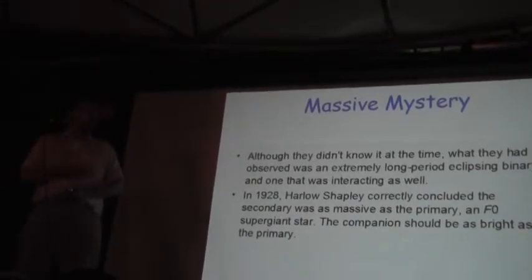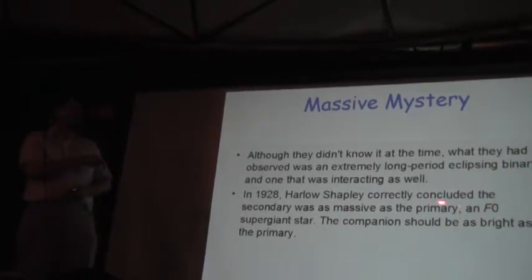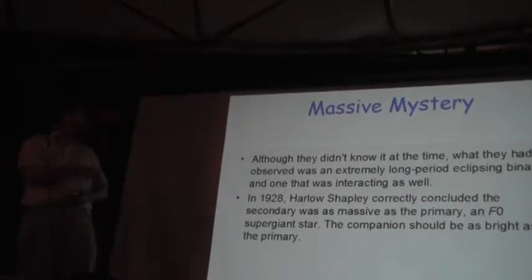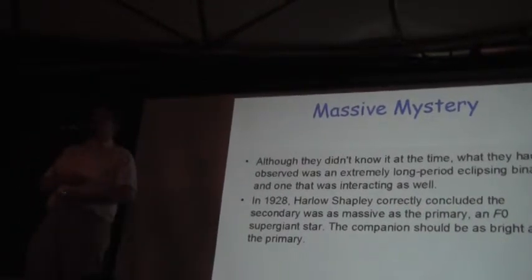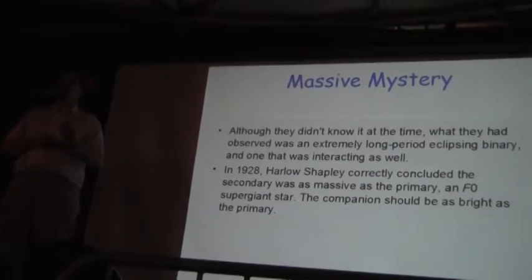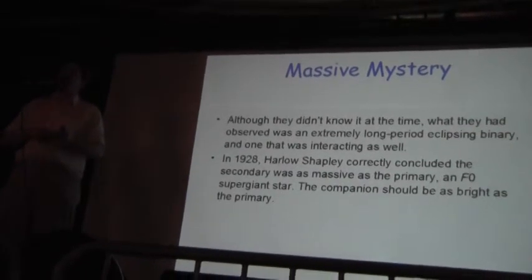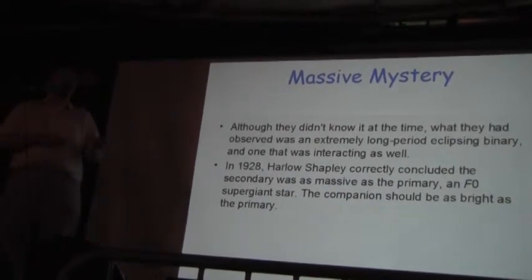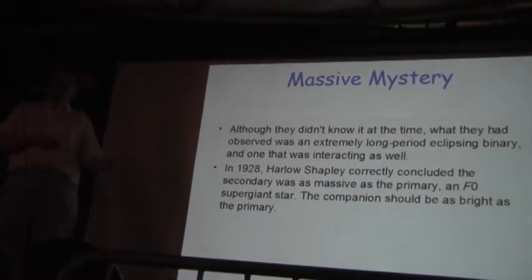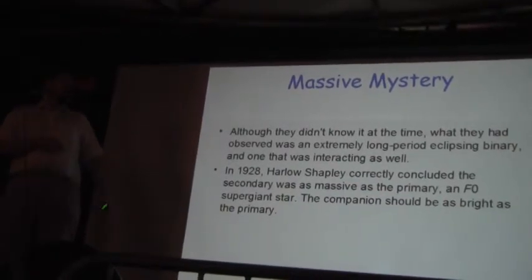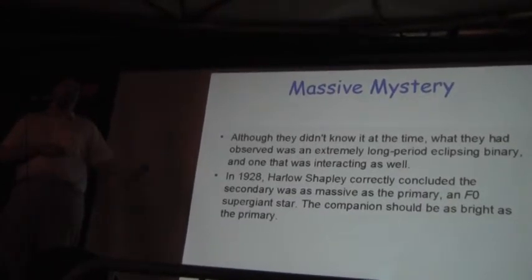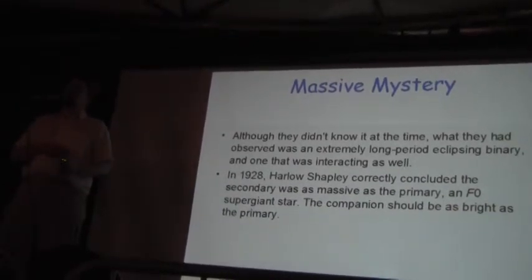And in 1928, Harlow Shapley correctly concluded, I'm not exactly convinced on this. That it was an F0 supergiant. That the primary is an F0 supergiant. Spectral classification's pretty loose in the interpretation of the spectra. A lot of people saying that it's a giant, and not a supergiant. So, its luminosity class is in doubt. And I've seen spectral classifications from F to the low G range.